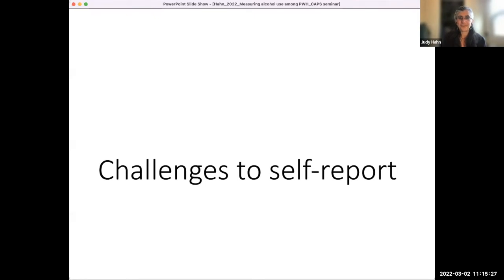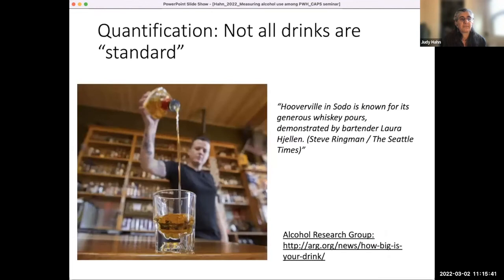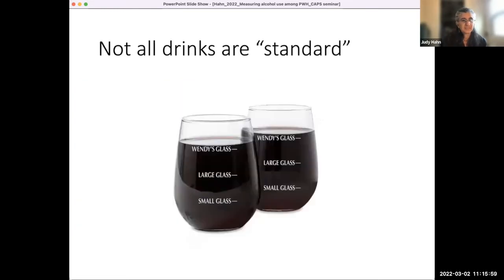But there are some challenges. The first one is recall bias — it can be hard, especially when questions ask about a longer time period in the past. Then there's quantification: when we ask people how many drinks they were having, they may not know. They might think they had one drink, but it was actually two drinks. And then there's the issue of serving size — a glass of wine to one person might actually represent two or three standard drinks, as Hooverville in Seattle is known for generous whiskey pours.